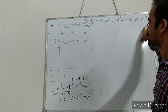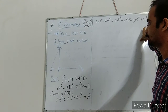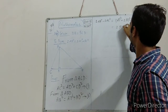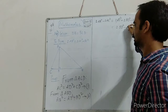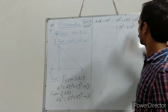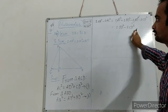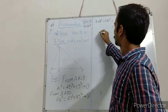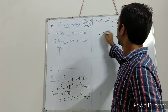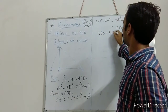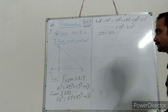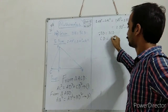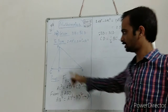Since bd is equal to 3cd, as given, and bd plus cd is equal to bc, we can write 3cd plus cd is equal to bc, which gives 4cd equals bc. From this, cd is equal to one fourth of bc.